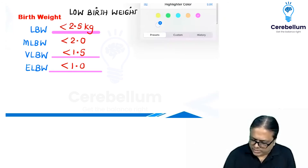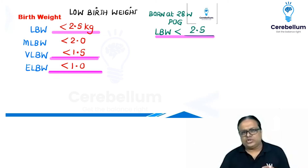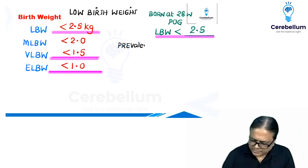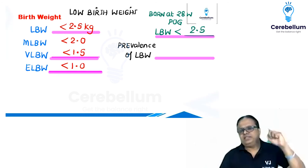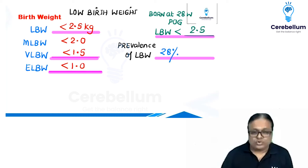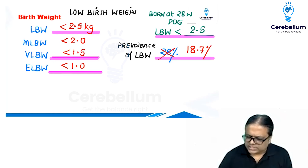Many years ago the FMG exam asked: what is the prevalence of low birth weight in India? When that question appeared about 10 years ago, the answer was 28%. But things have changed, so now you must mark the latest answer: 18.7%, or approximately 18%. That means roughly one out of every five births in India today is low birth weight.